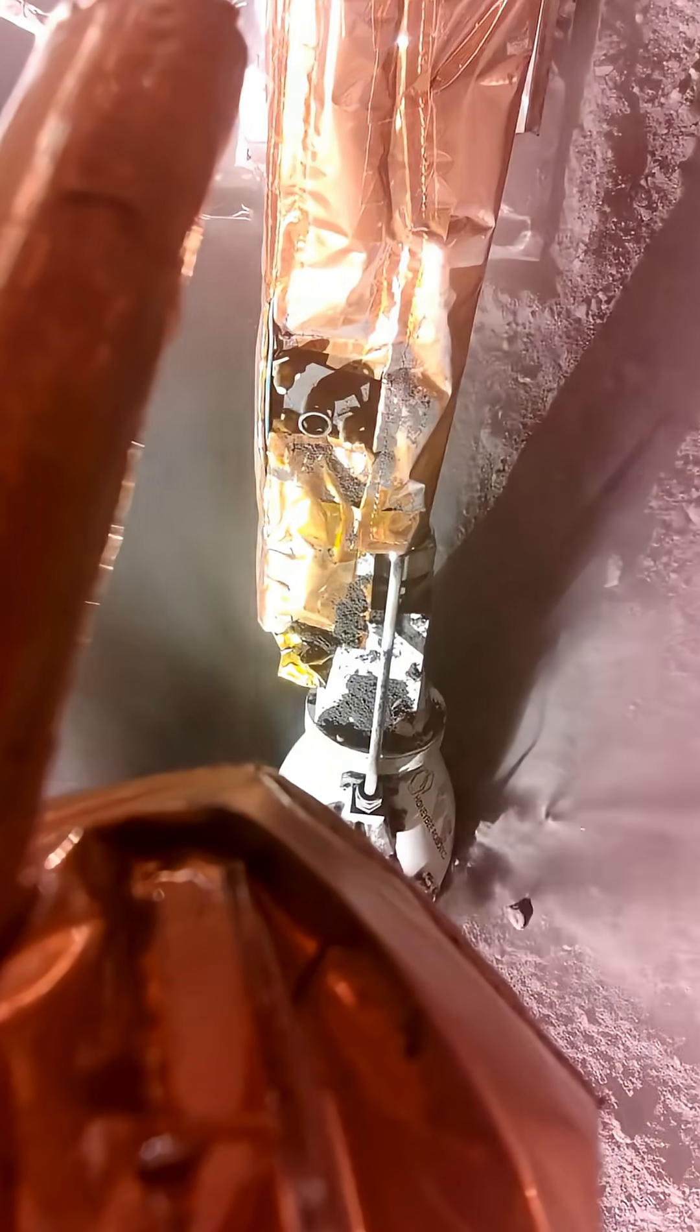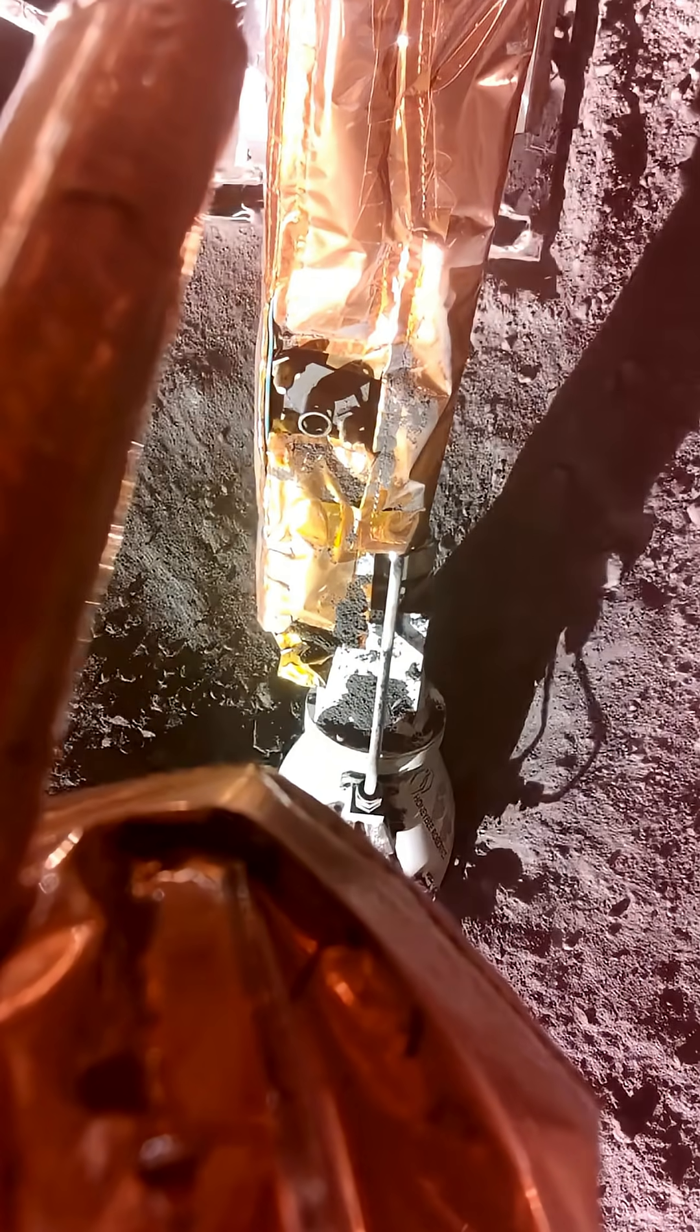One of the first is called the Lunar Planet Vac, which was used just a few days after touchdown. This instrument was developed to collect and transfer lunar soil from the moon to other science instruments or containers without relying on gravity.